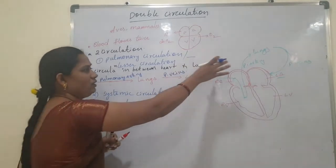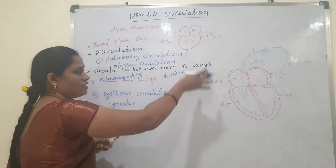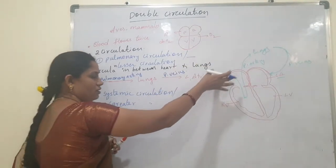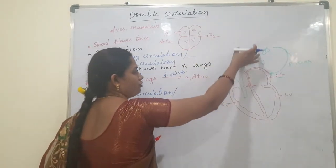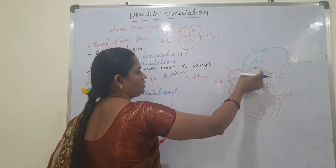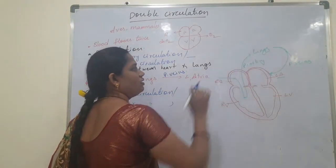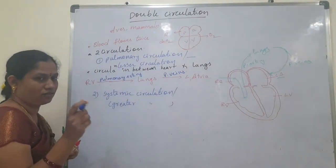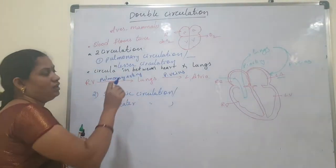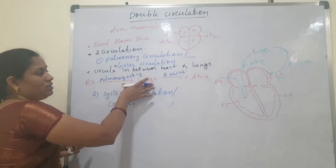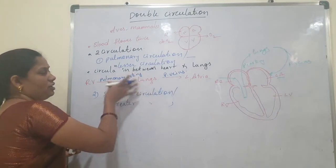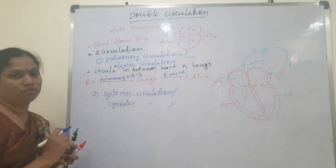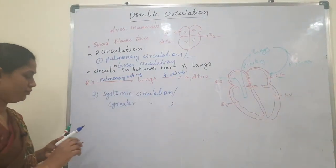In pulmonary circulation, the blood flows only between the heart and lungs — just one organ. That is why this circulation is called pulmonary circulation, or lesser circulation.